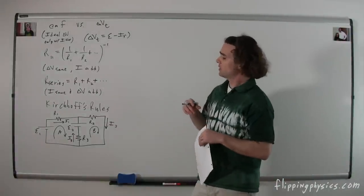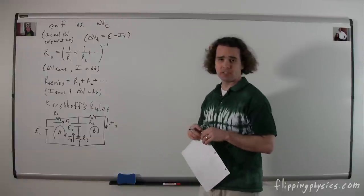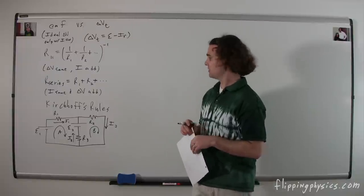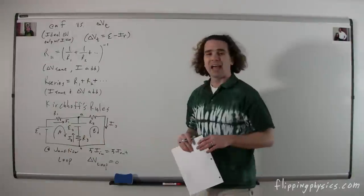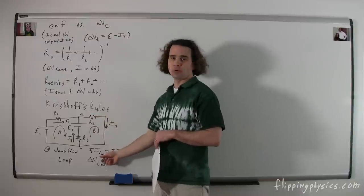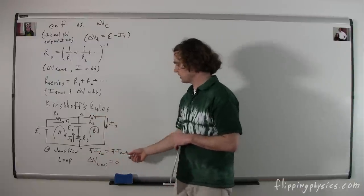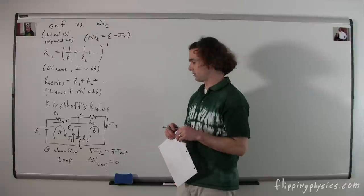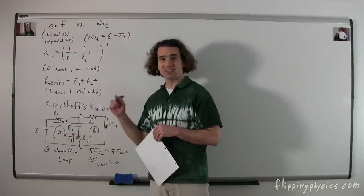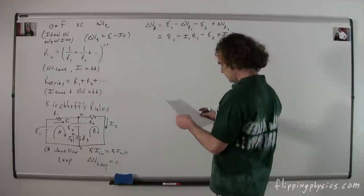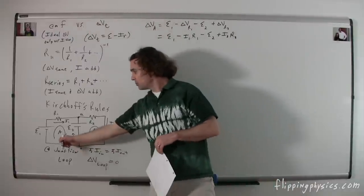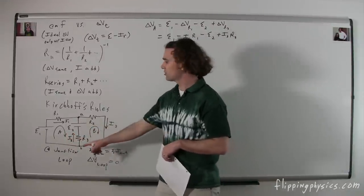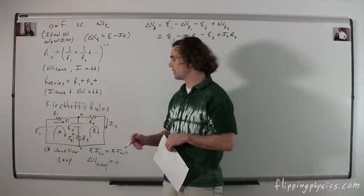Kirchhoff's rules are needed when, for example, we have two batteries in a circuit and it's hard to identify what the current directions are going to be. When using Kirchhoff's rules, at a junction the currents into the junction are equal to the currents going out. The electric potential difference around a loop is equal to zero. When using Kirchhoff's rules, you have to pick loop directions and a junction — you'll always have one more loop and one more junction than you need.